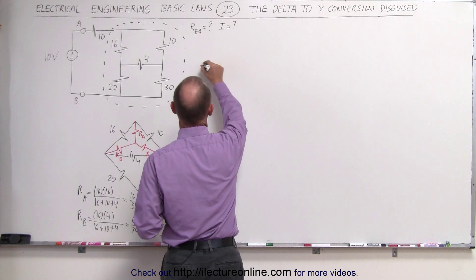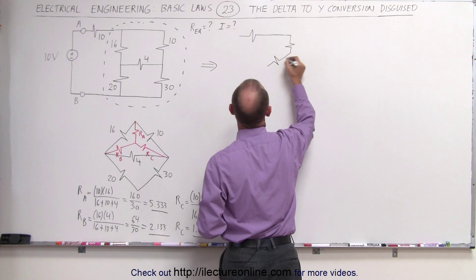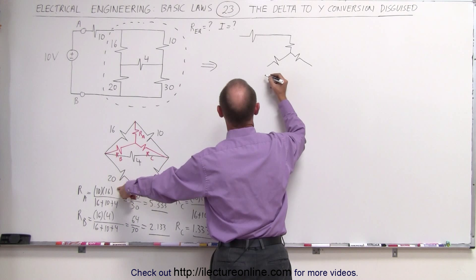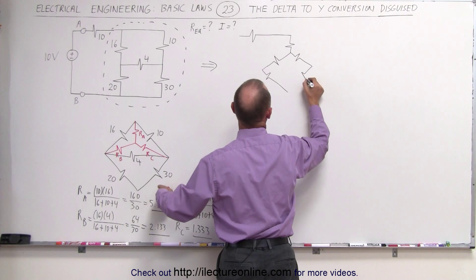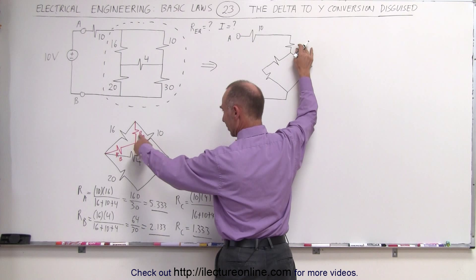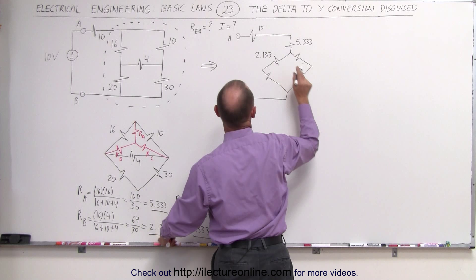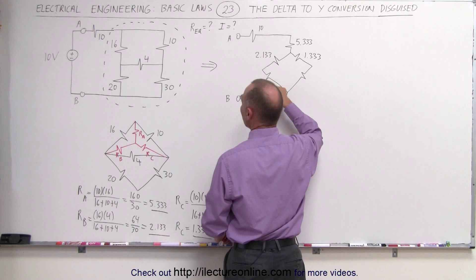We have the 10-ohm resistor. We now have the Y equivalent. This is R sub A, R sub B, R sub C, and now we have the 20-ohm resistor down here, and we have the 30-ohm resistor down here. And that then goes back to here. This is our terminal A and B. This was a 10-ohm resistor. This here now became the R sub A, which is the 5.333-ohm resistor. R sub B is now the 2.133-ohm resistor. And R sub C is the 1.333-ohm resistor. And this is 20, and this is 30 ohms.